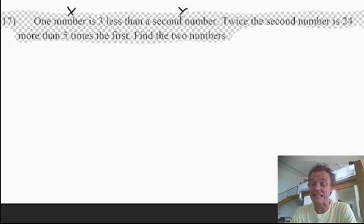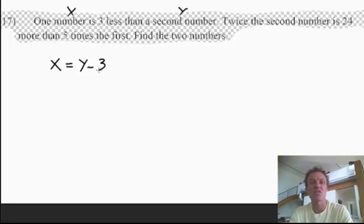So one number x equals, now, three less than a second number. It's not going to be three minus y. You've got a number and three less than that means you're going to take three away from that. So this is three less than a second number, or three less than y is y minus three. Be aware of that, not three minus y. So there you go, that's three less than the second number.